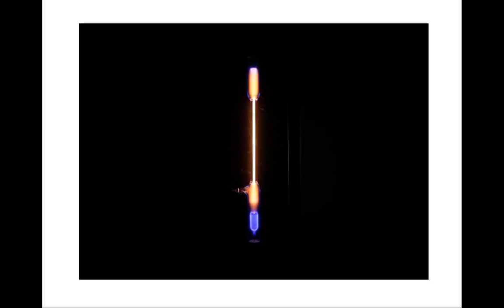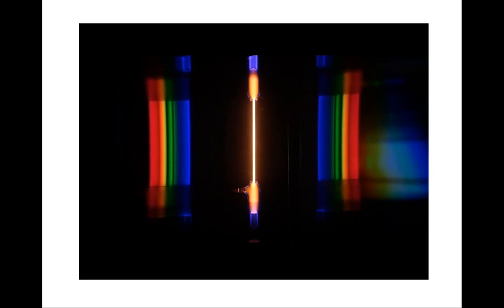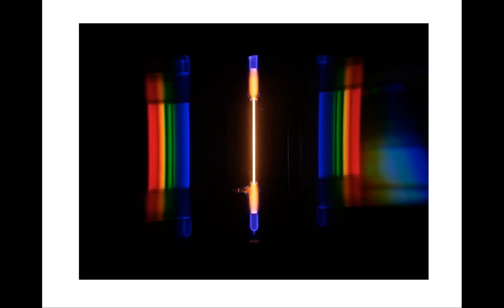This is nitrogen spectrum, and with the diffraction grading in place we see a number of lines present. Some red, orange, yellow, green, and a violet turquoise-ish colored line.